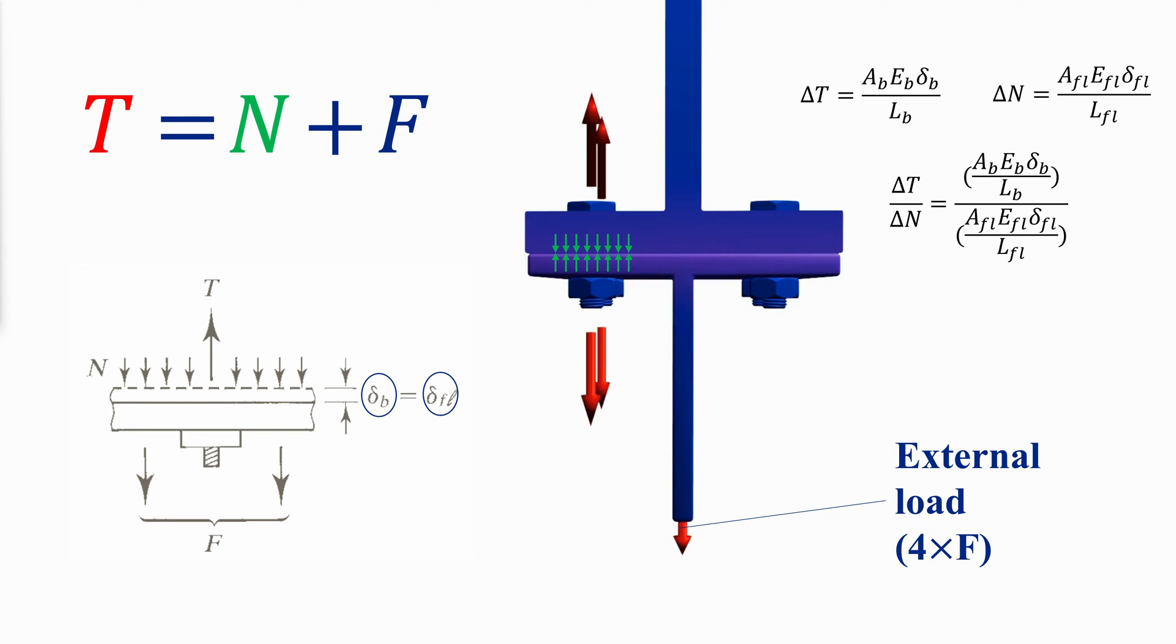Because the elastic modulus of steel is almost the same for the bolt and the flange and the amount of elongation in the bolt equals the amount of contraction in the flange, the ratio can be rewritten as such. The cross-sectional area of the bolt is much smaller than the surface area of the flange and the length of the bolt is much larger than the thickness of the flange. That is why the change in the tensile force due to the applied external force F is much less than the change in the compression between the flanges.